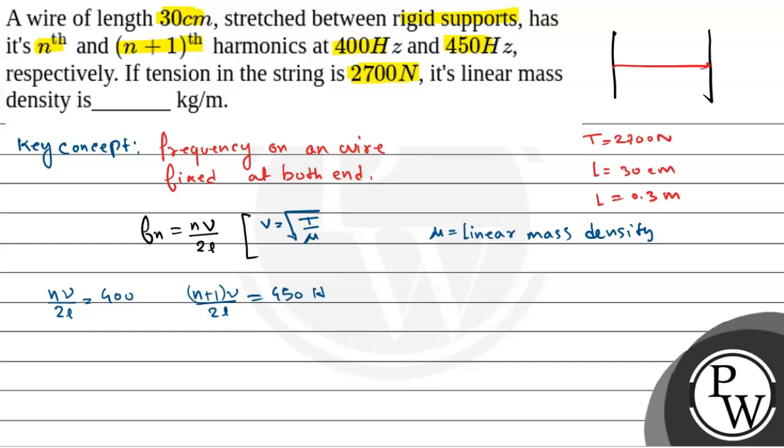This is equation 1 and this is equation 2. So from 2 minus 1 we get that v by 2L is equal to 50. So v is equal to 50 into 2L. This is equal to 50 into 2 into 0.3. This is equal to 30.